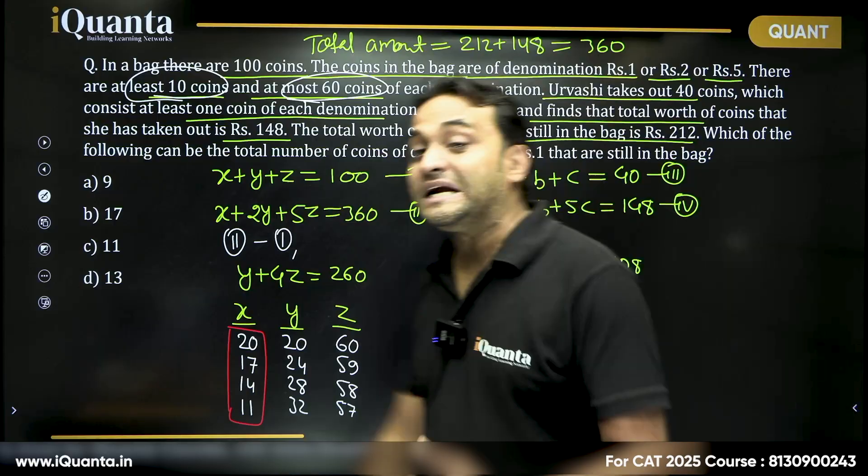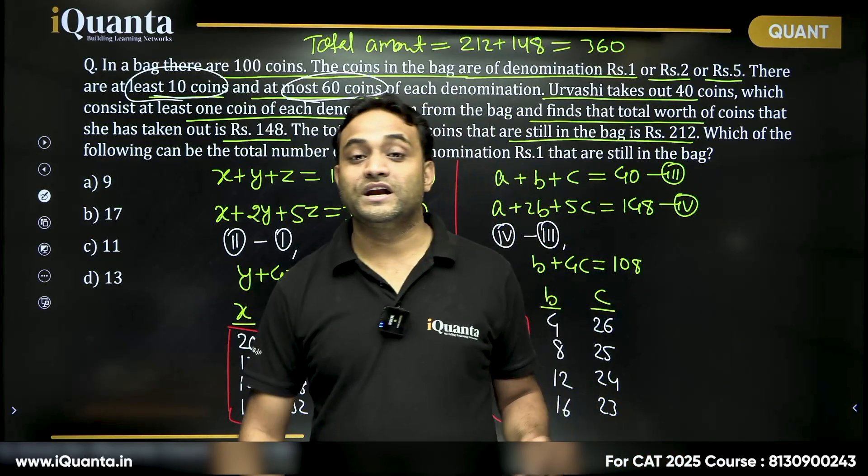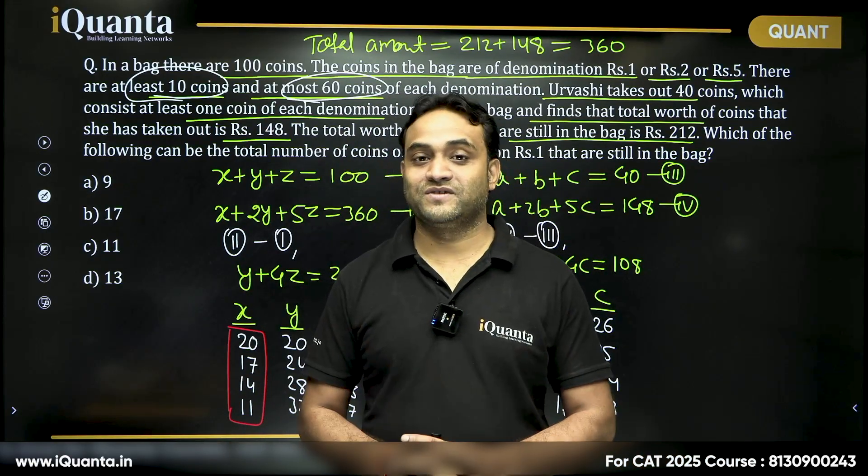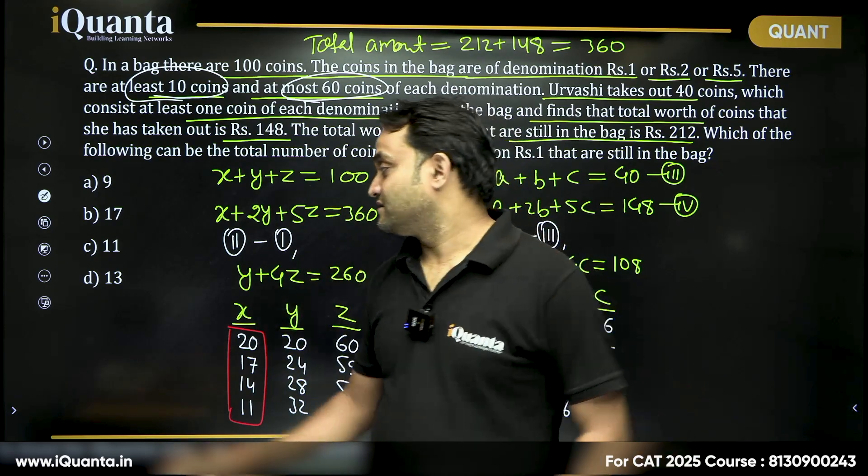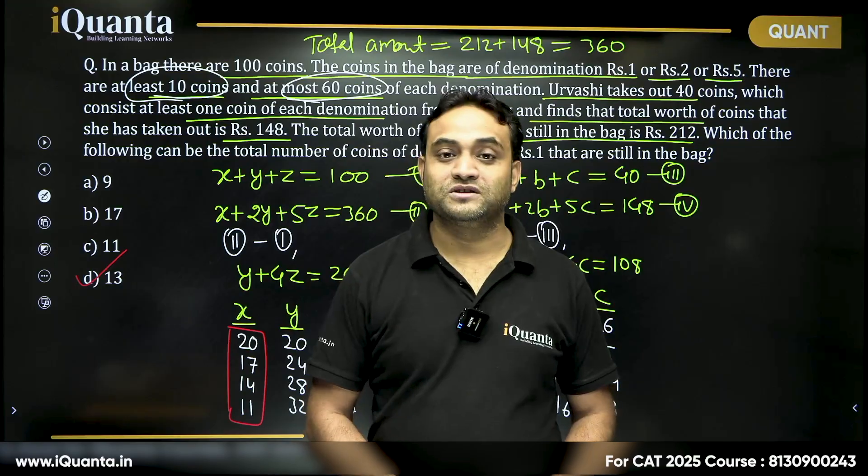So, there are multiple cases possible where number of coins left in this bag will be 1 rupee coin will be 13. So, our answer is option D.